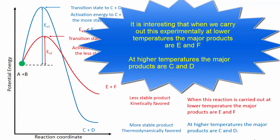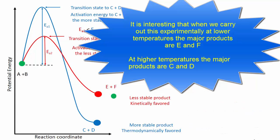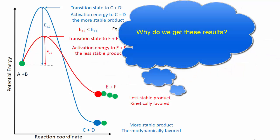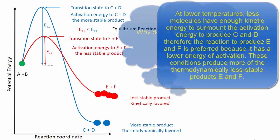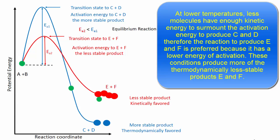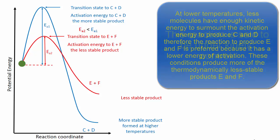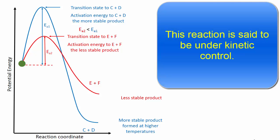It is interesting that when we carry out this experiment at lower temperatures, the major products are E and F. And at higher temperatures, the major products are C and D. At lower temperatures, fewer molecules have enough kinetic energy to surmount the activation energy to produce C and D. Therefore, the reaction to produce E and F is preferred because it has a lower energy of activation. These conditions produce more of the thermodynamically less stable products, E and F. This reaction is said to be under kinetic control.